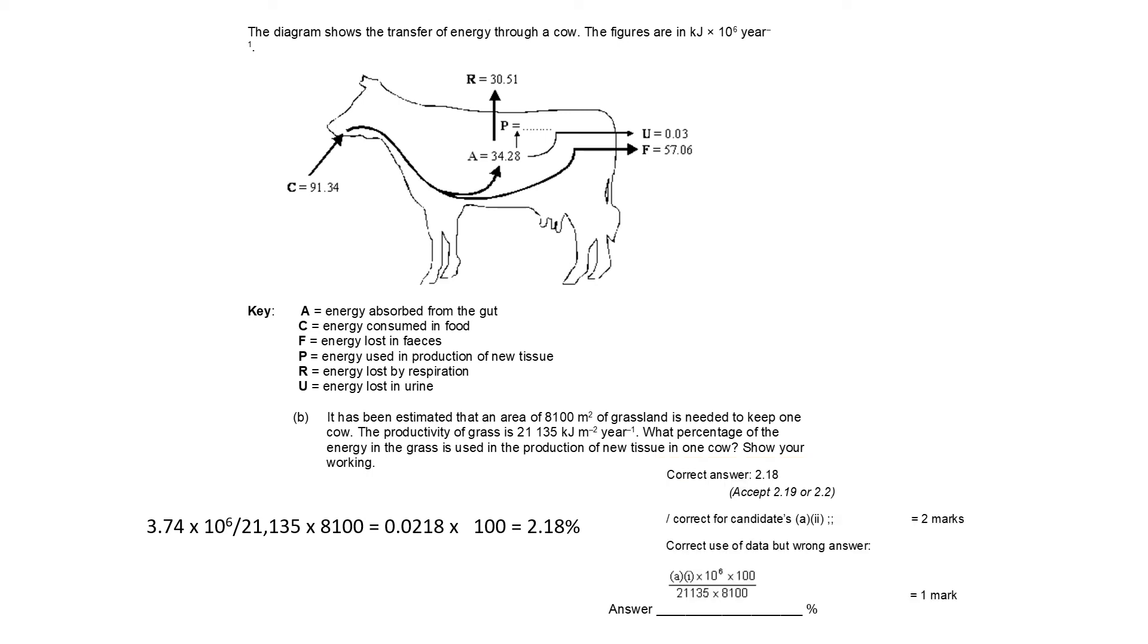And this is just the correct answer. I've taken this straight from the mark scheme. So correct answer is 2.18. They will accept 2.19 or even 2.2 if you rounded it to one decimal place. And notice it says correct for candidates A2. So in other words, this is where I said even if your answer is not the same as this, but it is correct based on your answer to the previous question, you can still get both marks. And then it also says here you can get one mark if you've shown your answer for A1 multiplied by 10 to the power of 6 divided by this product of these two numbers times by 100. So even if you've shown how to do the working, but for whatever reason you've punched the numbers in wrong on the calculator, and you've got the wrong number at the end, you can still get half of the mark.